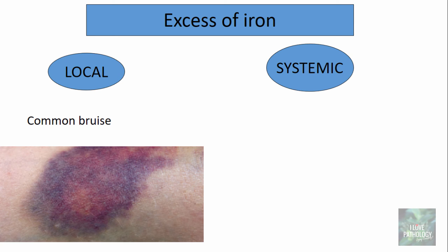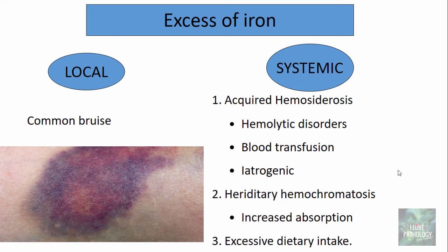Localized hemosiderosis occurs when hemosiderin is deposited in macrophages, epithelial cells, or alveolar cells — the most common example being a common bruise, where hemorrhage into the tissues leads to lysis of RBCs, release of hemoglobin, uptake of hemoglobin by macrophages, and its degradation and storage as hemosiderin. Systemic hemosiderosis can be acquired — from hemolytic disorders, blood transfusions, or iatrogenic causes — hereditary hemochromatosis with increased iron absorption, or excessive dietary intake of iron.